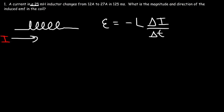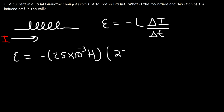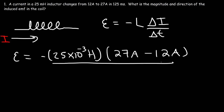We have L and the current, so we have everything we need. L is 25 millihenries, which is 25 times 10 to the minus 3 henries. The change in current is the final current of 27 minus the initial current of 12, divided by the change in time of 125 milliseconds, or 125 times 10 to the minus 3 seconds. The induced EMF is negative 3 volts.